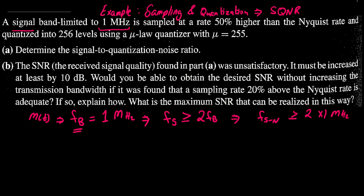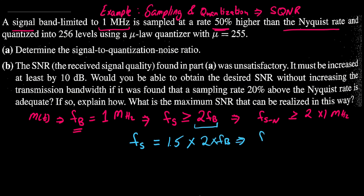Now the signal is band-limited to one megahertz and it is sampled at a rate 50 percent higher than the Nyquist rate. So the sampling frequency Fs is 1.5 times 2 times Fb, which indicates that the sampling frequency is 3 megahertz.